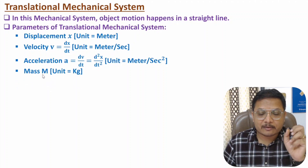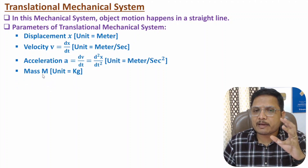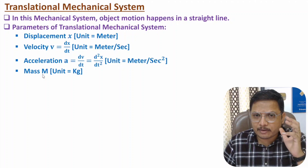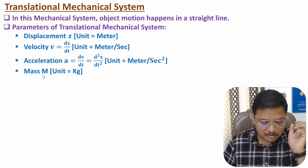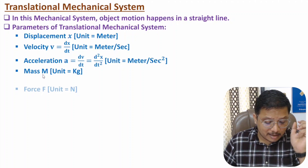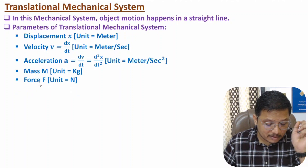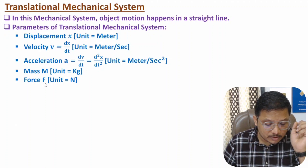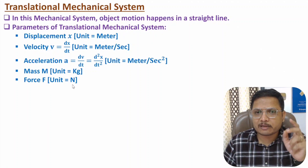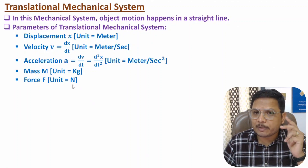The next parameter is mass. Any body can be having mass m, and the unit of mass is kilogram. One more parameter used to analyze translational mechanical system is force. The unit of force is Newton, which means kilogram meter per second square.